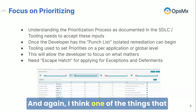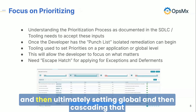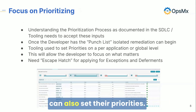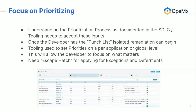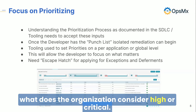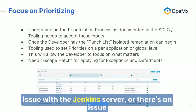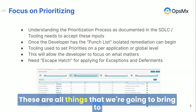On prioritization: one of the things we're doing in our tool is allowing organizations to set global rules and then cascade that down to the application layer, where application owners can also set their priorities. We're allowing each one of the rules or checks that we're doing to be categorized by the organization based on its criticality. Even for things that are non-CVE related, the developer can see what the organization considers high or critical — it could be something as simple as an issue with the Jenkins server or the way the source code repository has been configured.